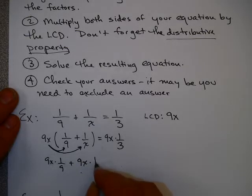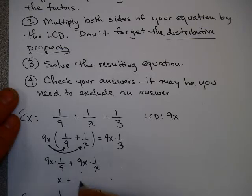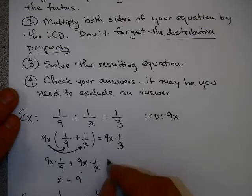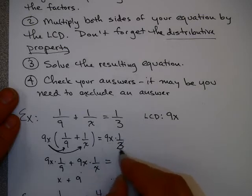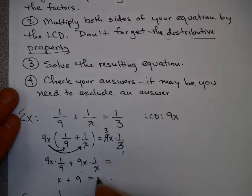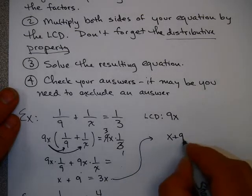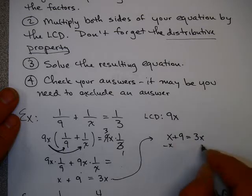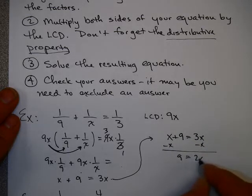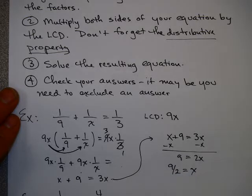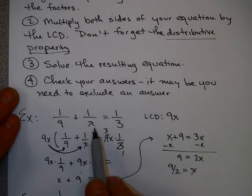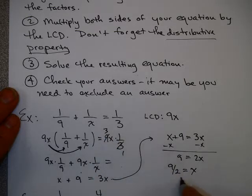So 9x times 1/9 plus 9x times 1/x gives you x + 9. And over here, we're going to cancel a 3 and a 9, that gives you 3x. So this is a nice simple linear equation. Subtract x from both sides. Get 9 equals 2x. So x equals 9/2, or 4 and a half. Now that's not 0, so this doesn't need to be excluded. It doesn't hurt to check your answer though, and I'll leave that to you. However, this does not need to be excluded because it didn't end up with an answer of 0.